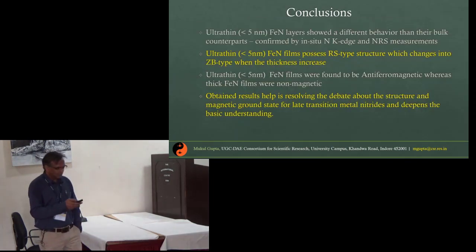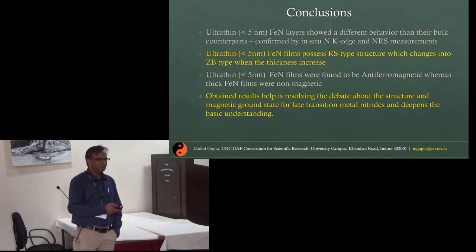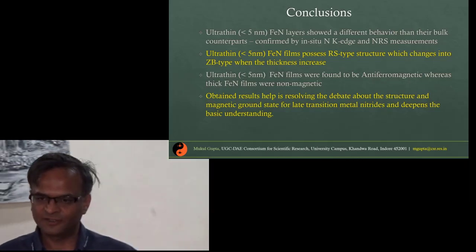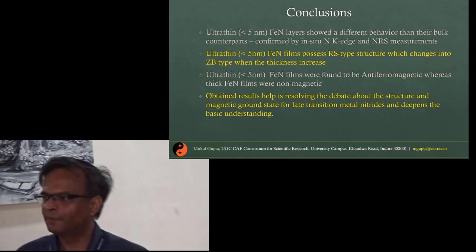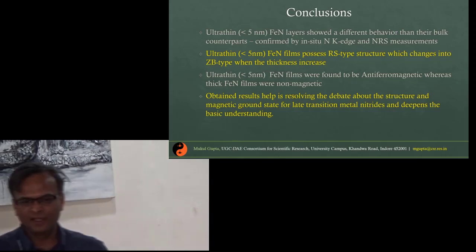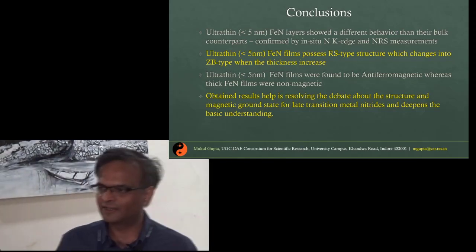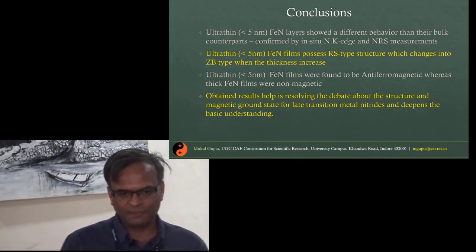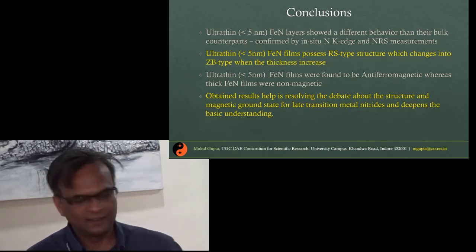This is what we can conclude: ultra-thin FeN films possess an antiferromagnetic ground state and there is a structural transition that is taking place as a function of thickness. What happens is that there is a tensile stress applied in-plane when the film evolves, and this is why this transition occurs.